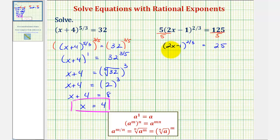And now, because we want 2x minus 1 raised to the first power, not to the two-thirds power, we'll raise both sides of the equation to the reciprocal power of two-thirds, which would be three-halves.